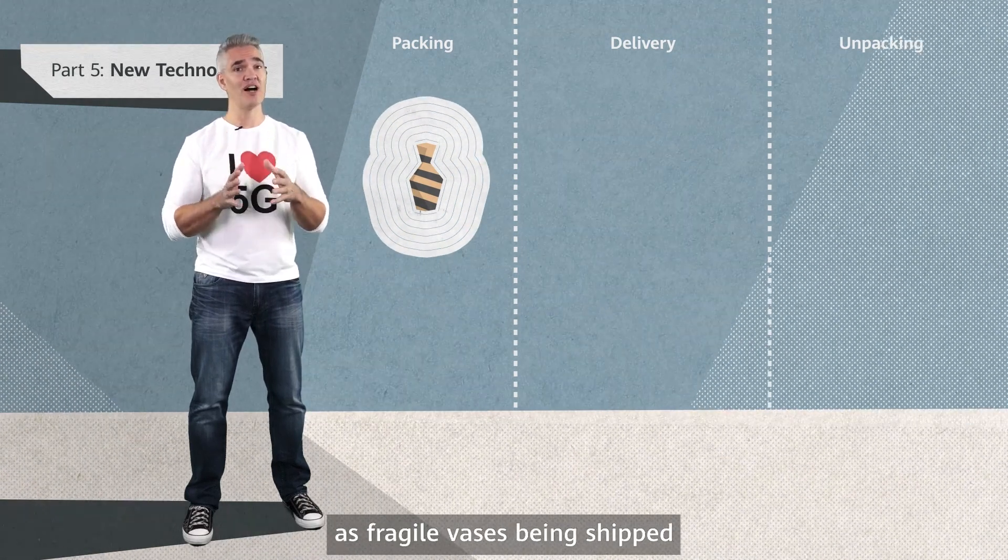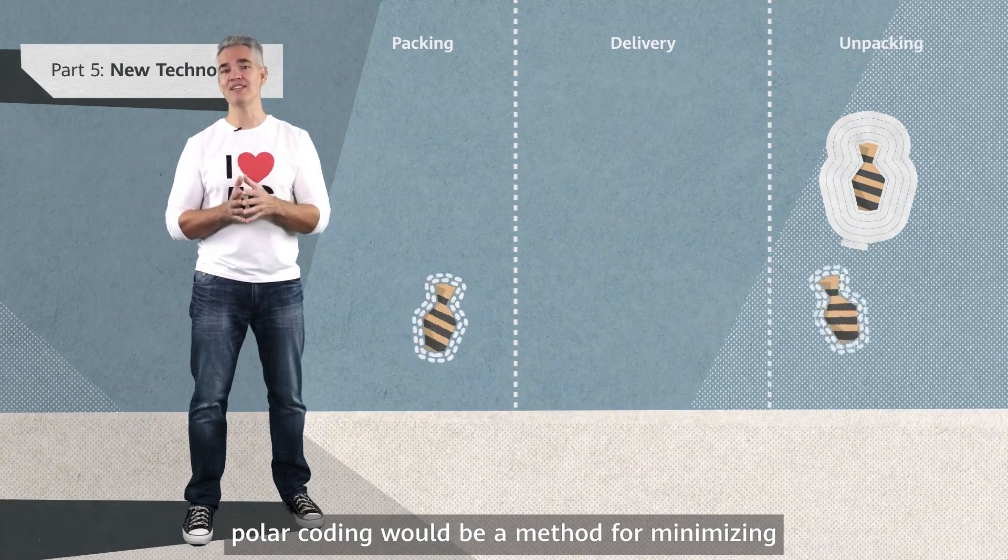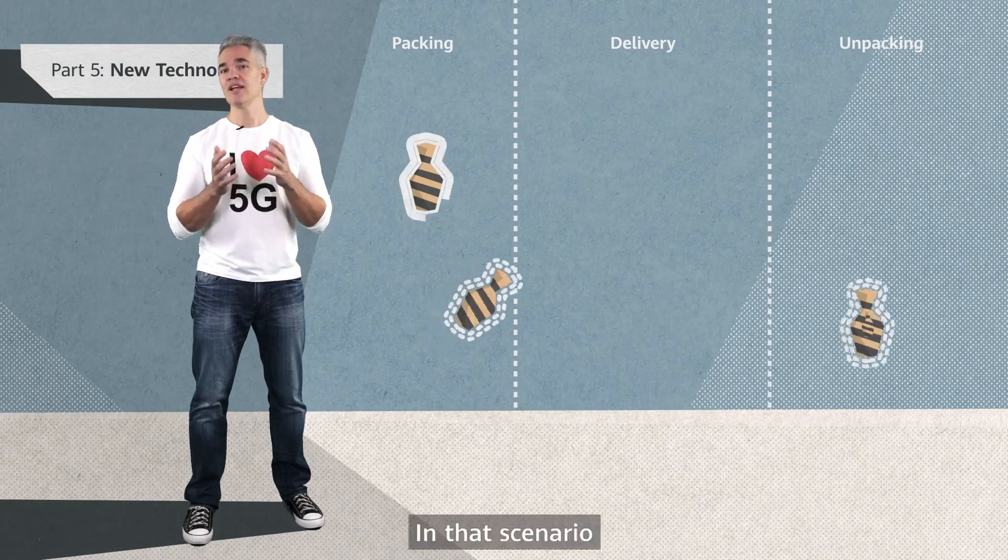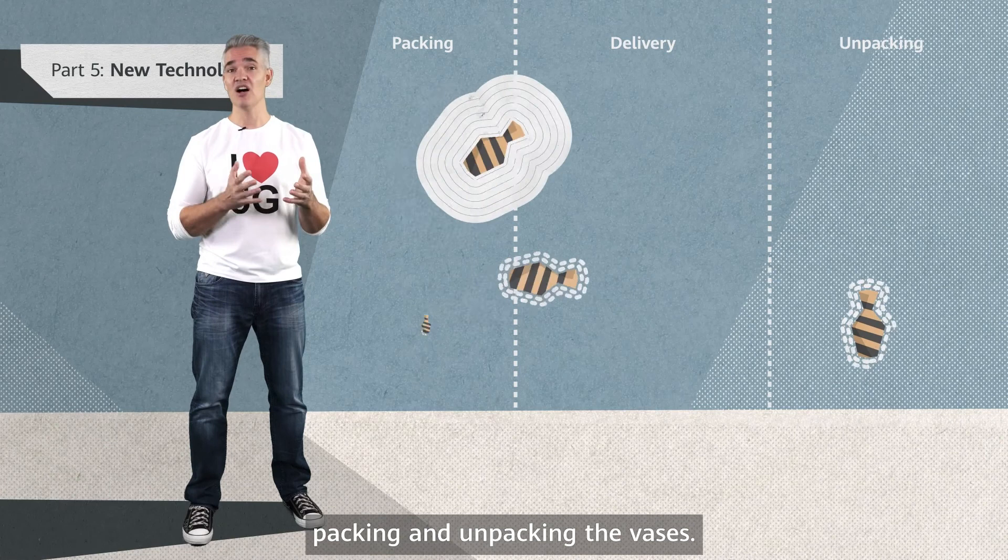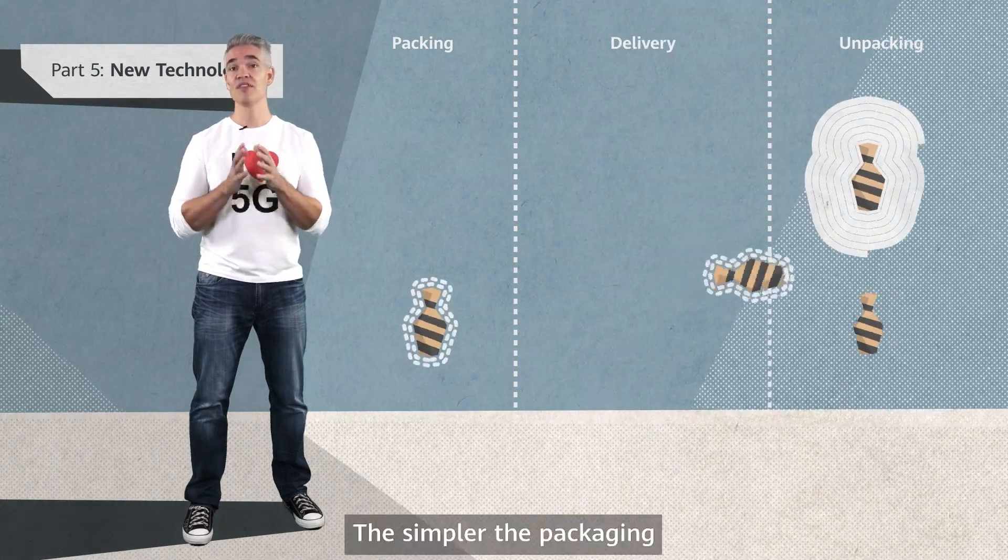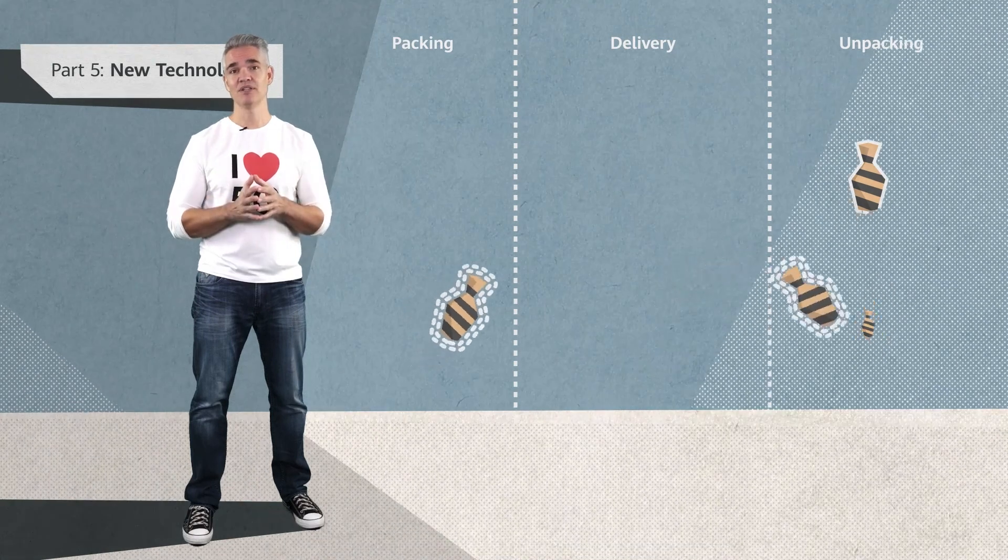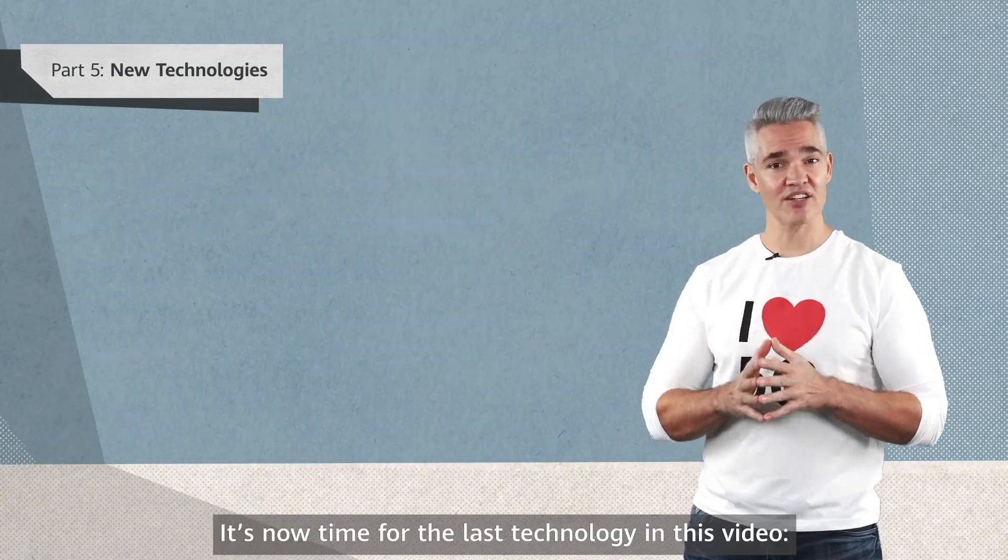If you were to think of data being sent wirelessly as fragile vases being shipped, polar coding would be a method for minimizing the amount of padding material used to protect the vases. In this scenario, channel coding would be the process of packing and unpacking the vases. The simpler the packaging, the simpler the packing and unpacking. This is what polar coding achieves.